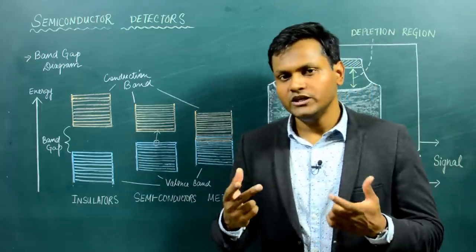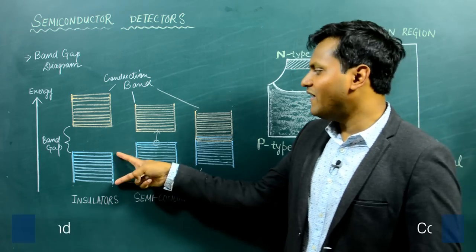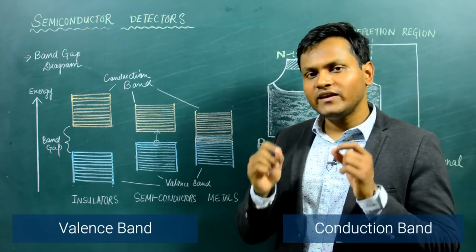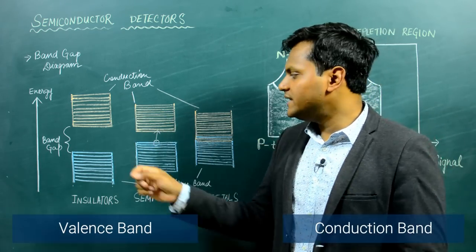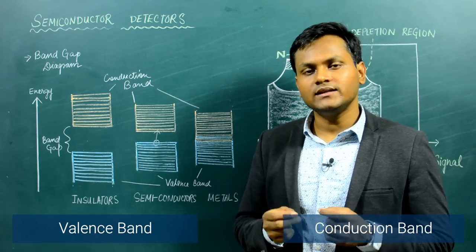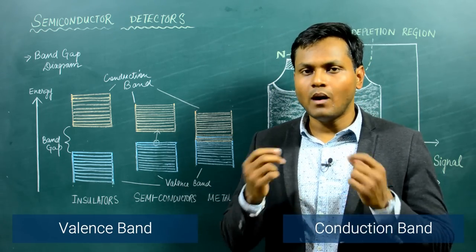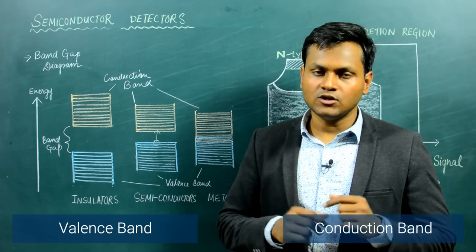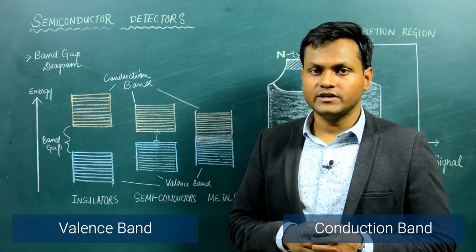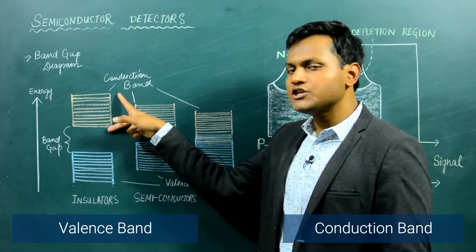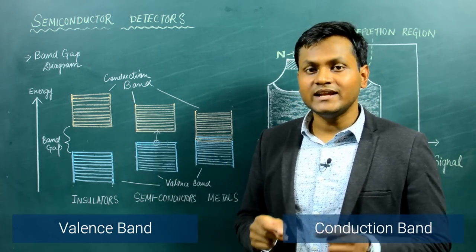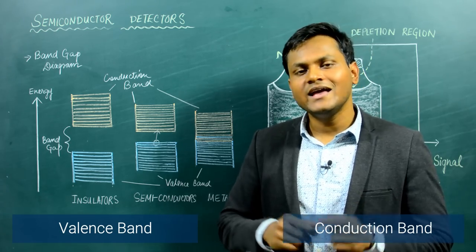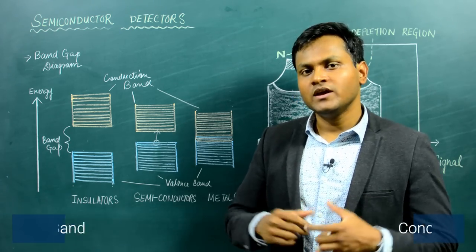There are two kinds of bands we need to know. One is the valence band, the other is the conduction band. If an electron is in the valence band, it simply means that the electron is bound to the atom, it's not free to move around, and it does not conduct electricity. If the electron is in the conduction band, it means that it is not bound, it's free to move around inside the material, and it will conduct electricity.